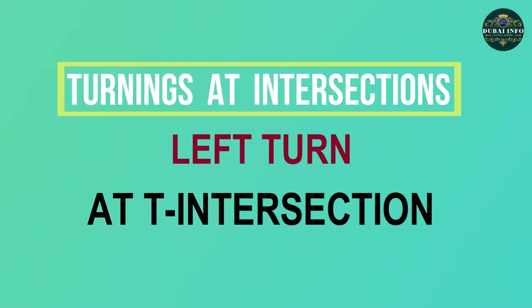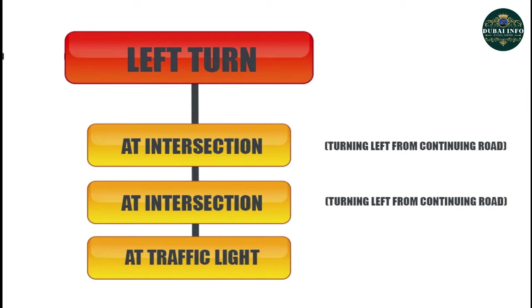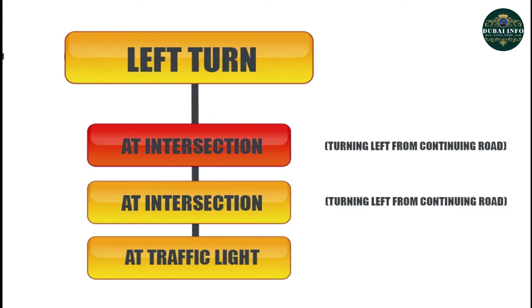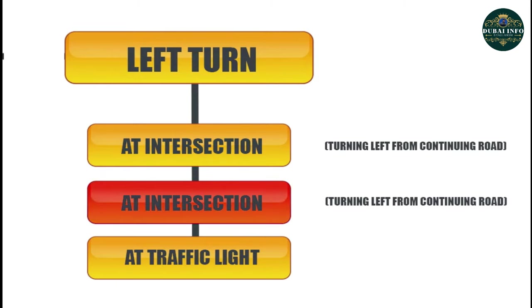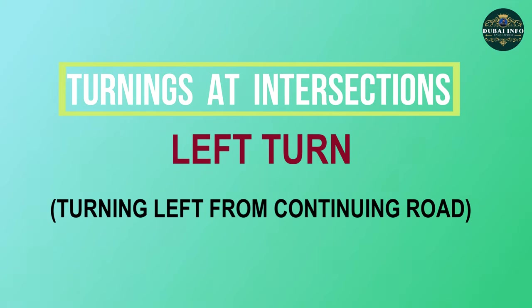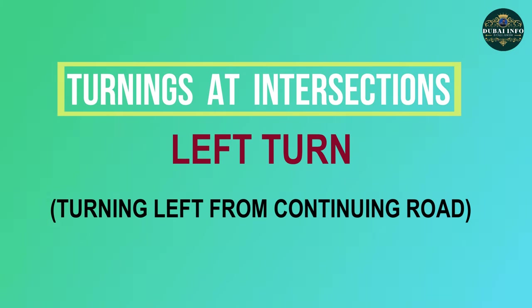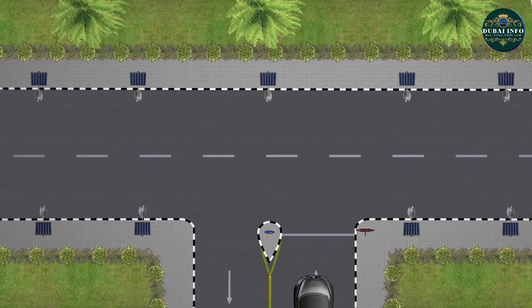Left turn at intersection. Motorists may turn left from the intersection. There are four types of turnings for left: A. Turning left into continuing road, from terminating to continuing road. B. Turning left from continuing road, from continuing to side road. To make a left turn from a T intersection, follow the MSPSL routine while approaching.